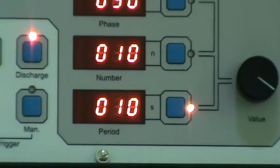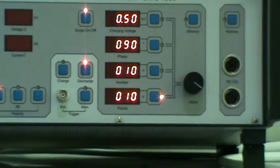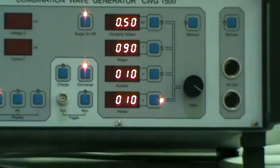Now a 0.5 KV surge is applied at 90 degrees in 10 second cycle for 10 times.